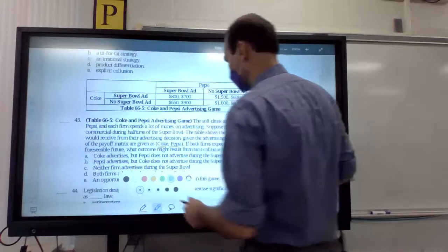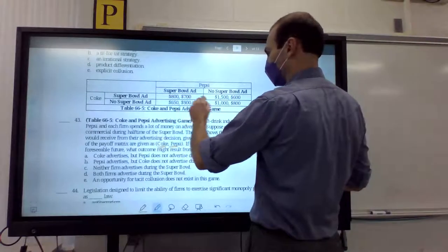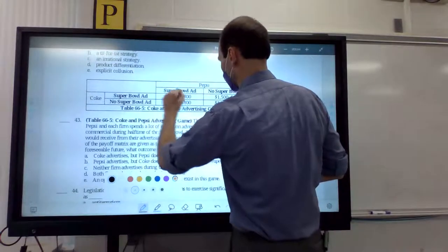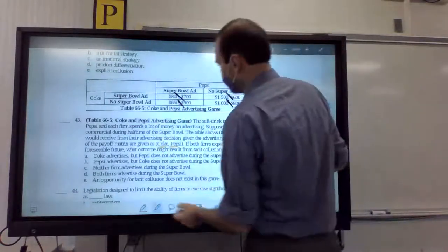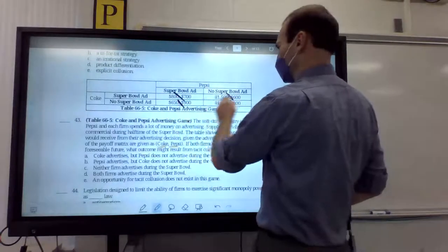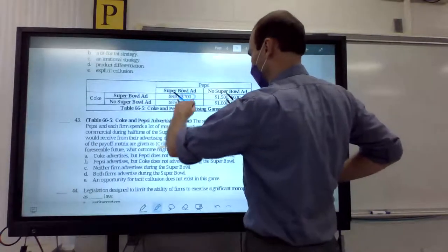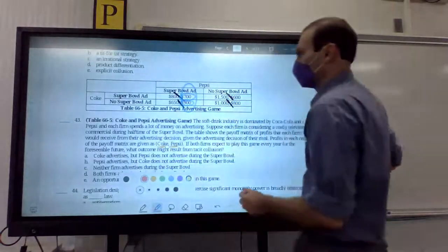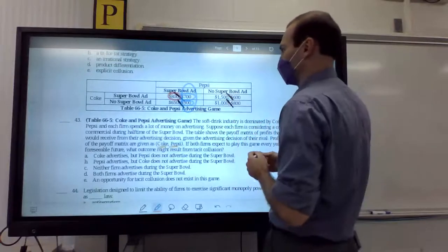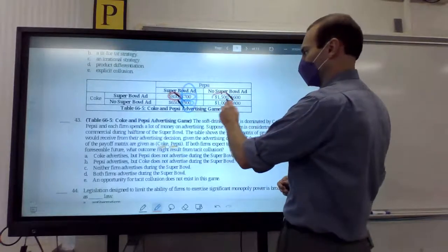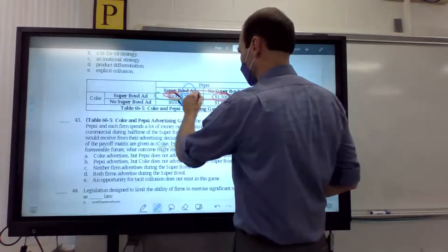So, we go ahead and look at this and let's solve this. If Coke advertises, what should Pepsi do? Remember, if you want to draw your lines, go ahead and draw that line. Now, divide them up, but don't do it on the test. Do it on your own paper. Okay. So, if Coke advertises, what should Pepsi do? Advertise. If Coke does not advertise, what should Pepsi do? Advertise. So, Pepsi has a dominant strategy. On the other hand, if Pepsi advertises, what should Coke do? $800, $650. They should advertise. What happens if Pepsi does not advertise? $1,500, $1,000. So, Coke has a dominant strategy. And we have a Nash equilibrium right here. Advertise. Advertise.